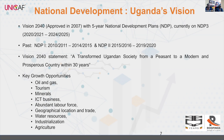Uganda's national development is guided by Vision 2040, a 30-year government vision broken down into five-year plans. Key areas of growth include oil and gas, tourism, ICT — which is key for this kind of discussion — an abundant labor force, geographical location, and many others.